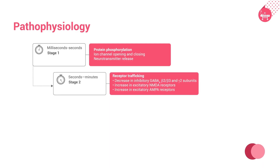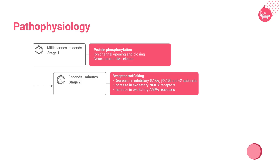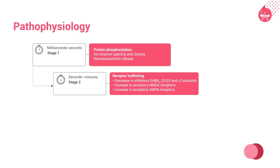Stage 2: seconds to minutes. The molecular events are followed by alterations in receptor trafficking, which includes endocytosis-mediated decrease in inhibitory GABA beta-2 or beta-3 and gamma-2 receptor subunits; increase in excitatory NMDA (N-methyl-D-aspartate) receptors; and increase in excitatory AMPA (alpha-amino-3-hydroxy-5-methyl-4-isoxazole-propionic acid) receptors.